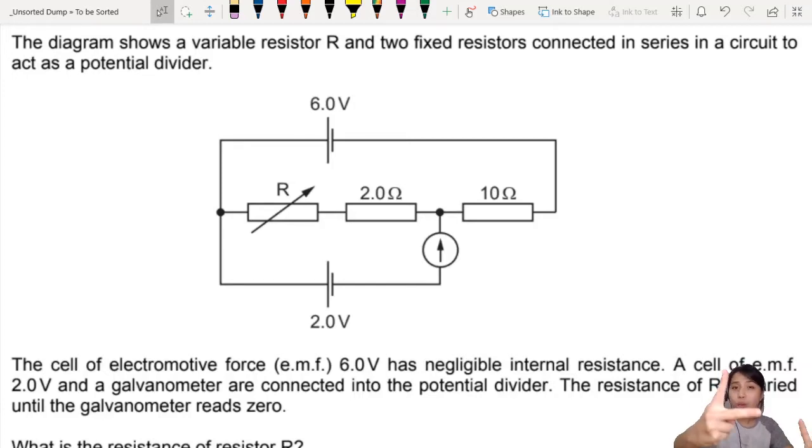When you see this kind of circuit, two batteries, bunch of resistors or wire, and this galvanometer or ammeter, you should know straight away this is a potentiometer, potential divider kind of question.